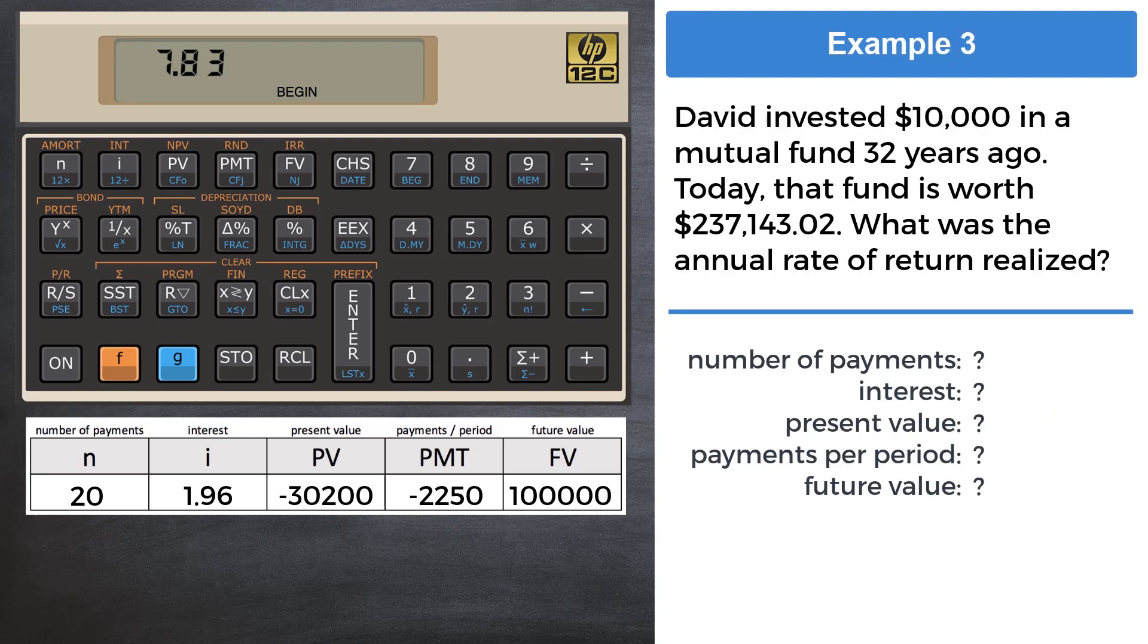Example 3: David invested $10,000 in a mutual fund 32 years ago. Today that fund is worth $237,143.02. What was the annual rate of return realized? Clear financial registers with F REG, and let's take care to set the calculator back to end by keying in G8. Notice the word begin vanishes from the display.